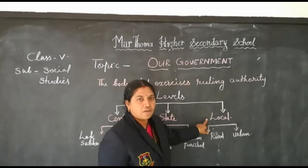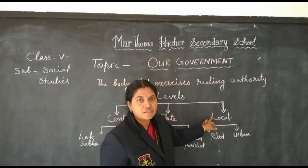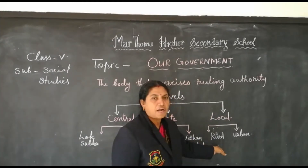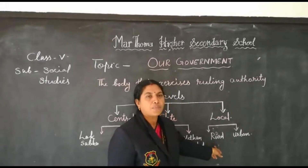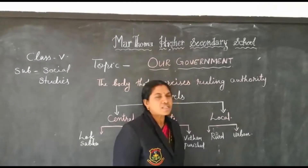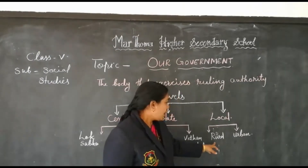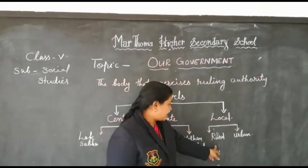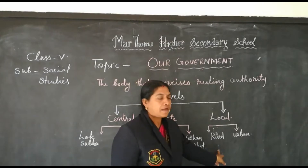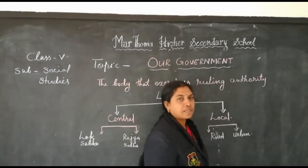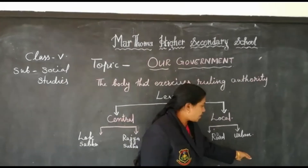The third level is called the local government. Local government means the states are divided into districts. Districts are divided into two: rural administration and urban administration. Rural administration means the panchayat administration, and urban administration means the cities and towns. The urban administration is divided into municipal corporation, municipal committee, and city council.